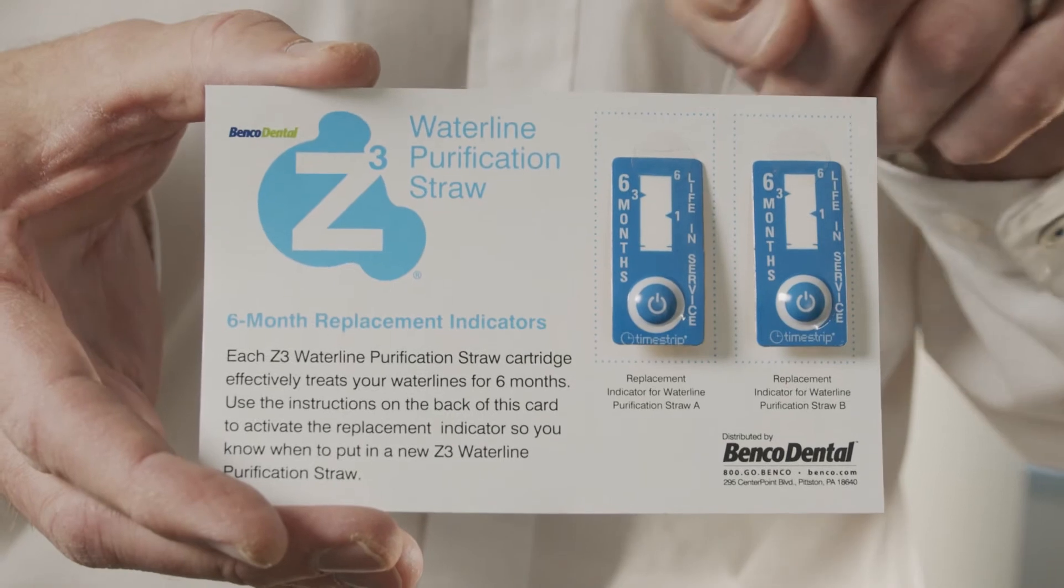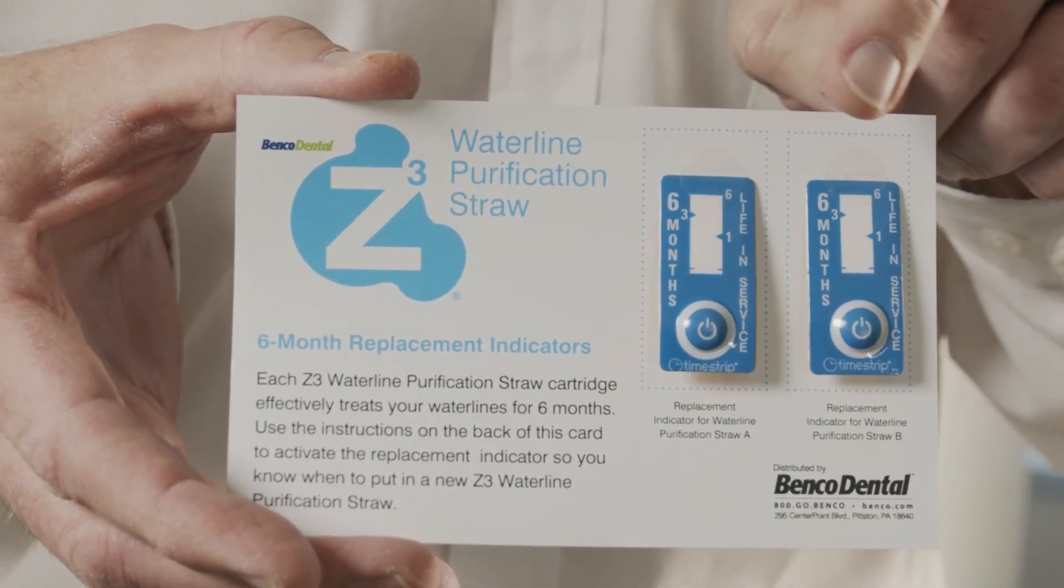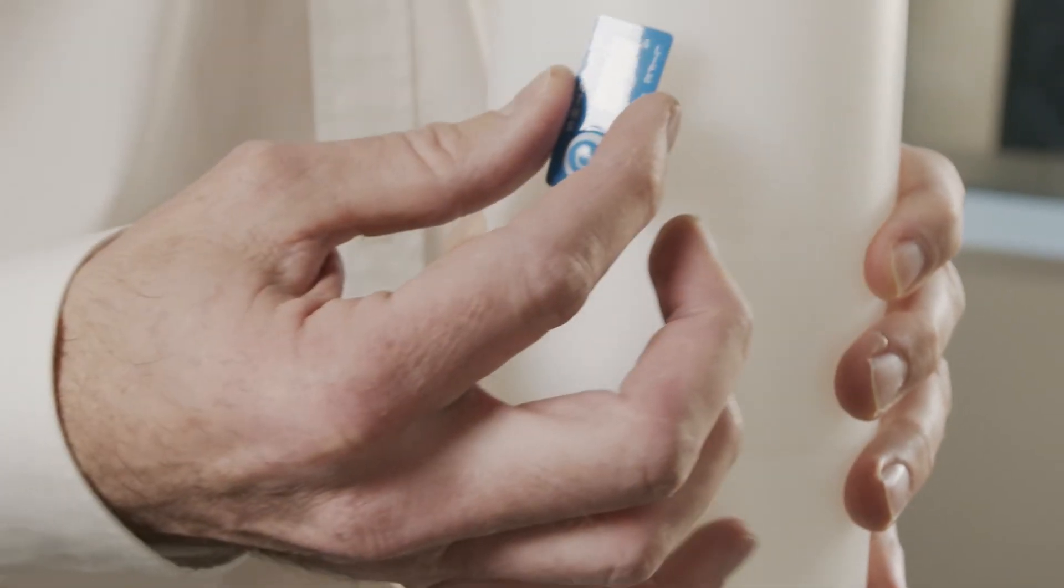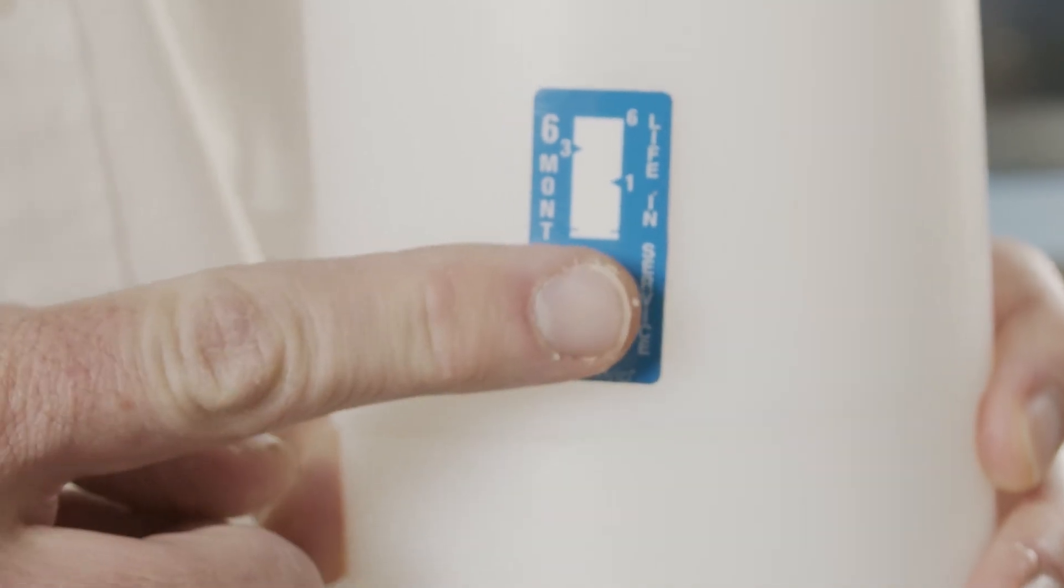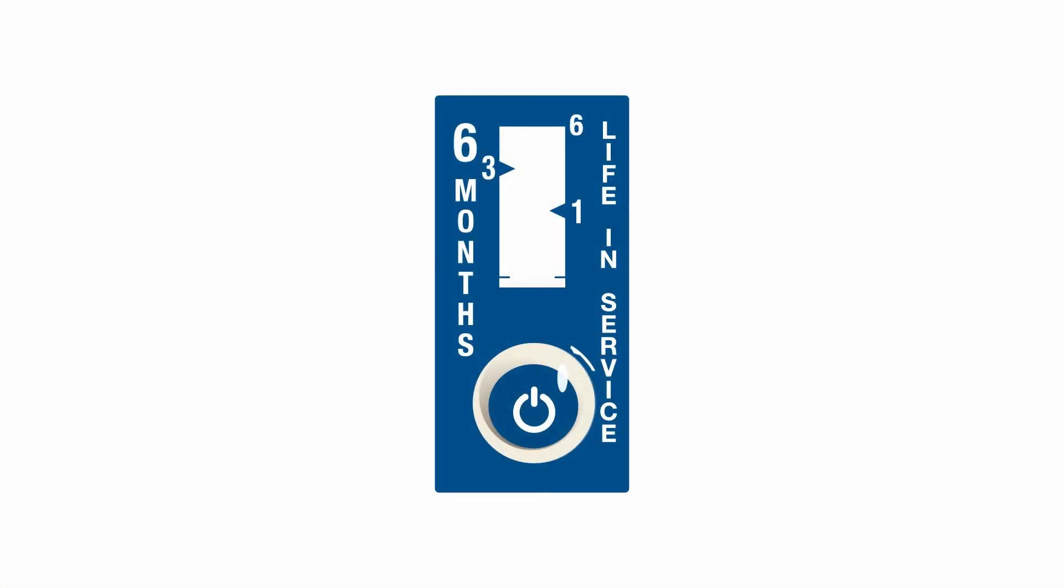And just to make your life even easier, the Z3 straw comes with an automatic replacement indicator. Just press the indicator, wait until the bottom line fills with red, and let the indicator do the rest.